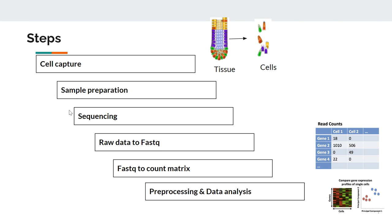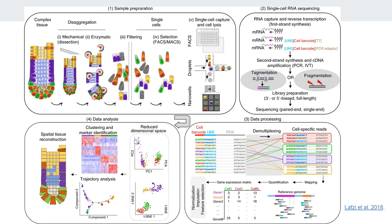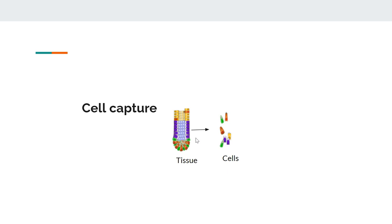The first three steps are mainly experimental, and once sequencing is done all subsequent steps are downstream informatics and bioinformatics analysis. We will now see each step in detail. This detailed view shows: first, capturing the cell or preparing the sample; then sequencing; then the analysis. We'll look at each one by one, starting with how to capture cells from the tissue.